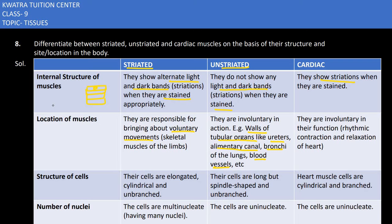Cardiac muscles function involuntarily because they are located in the heart, responsible for contraction and relaxation of the heart. In terms of cell structure, striated muscle cells are elongated, cylindrical, and unbranched. Unstriated cells are long but spindle-shaped and unbranched, whereas heart muscle cells are cylindrical and branched.